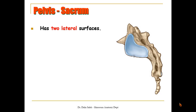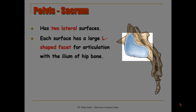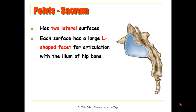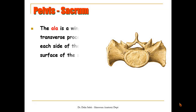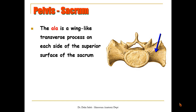From its side view, it has two lateral surfaces. Each surface has a large L-shaped facet for articulation with the ilium of the hip bone. Posterior to the facet is a large roughened area for the attachment of the sacral area. In this view, we can see a wing-like transverse process on each side of the superior surface of the sacrum — we call it the ala of the sacrum.